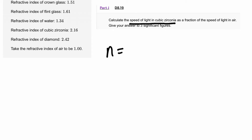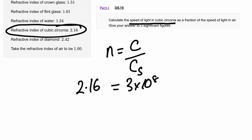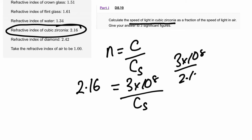The equation is n equals c over cs, where c is the speed of light, cs is the speed of light in the new substance, and n is the refractive index. For cubic zirconia, the refractive index is 2.16 and the speed of light is 3 × 10⁸ metres per second, as given on the AQA data sheet. Rearranging gives 3 × 10⁸ divided by 2.16.